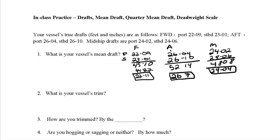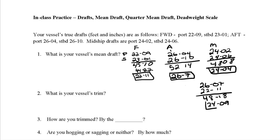Now we calculate the mean draft, which is the average of the forward and aft drafts. We add 26.07 and 22.11 to get 48.18, and half of that is 24.09. So the mean draft is 24'09".